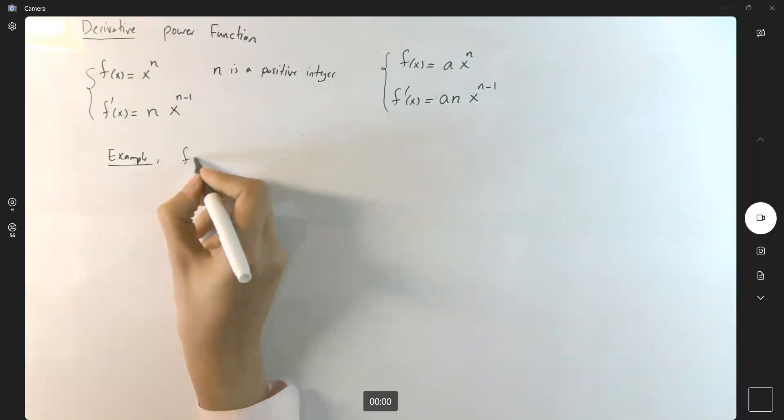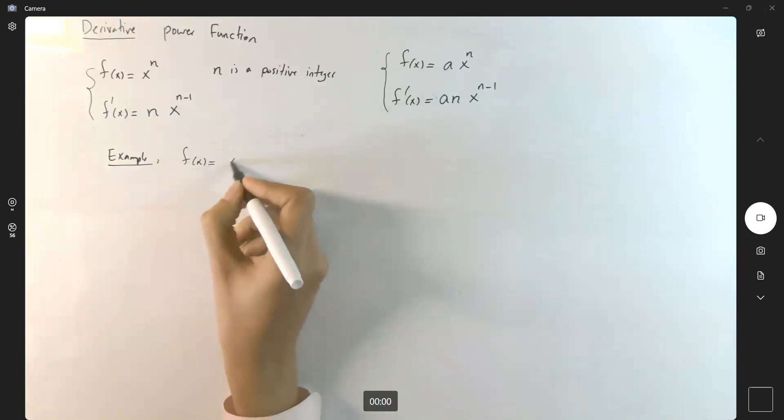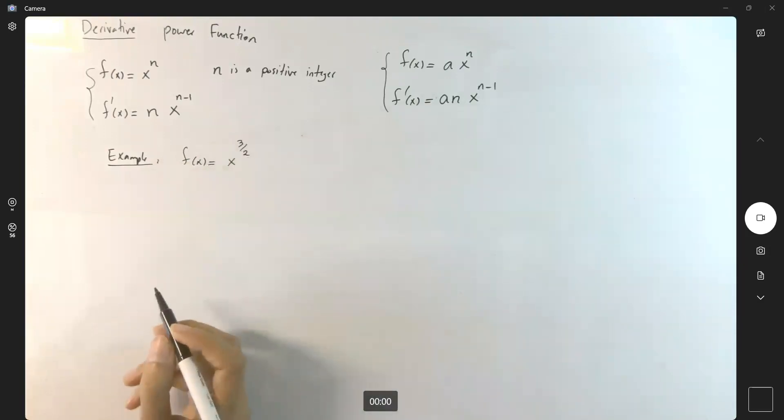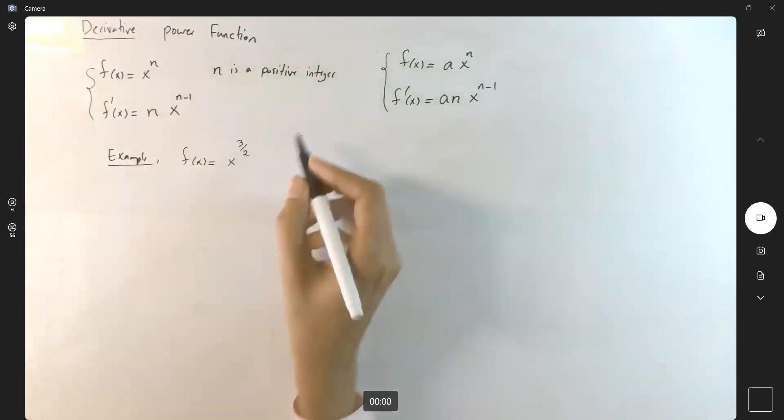Now, suppose you have f(x) equals x to the power 3/2. As you can see, your n is equal to 3/2.